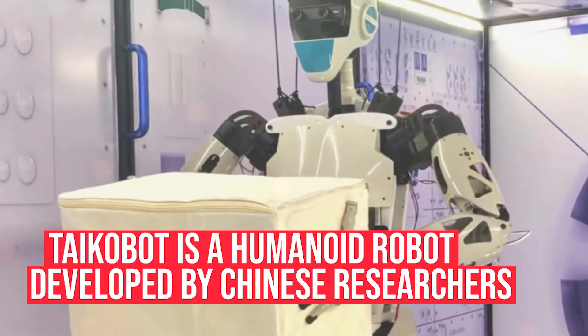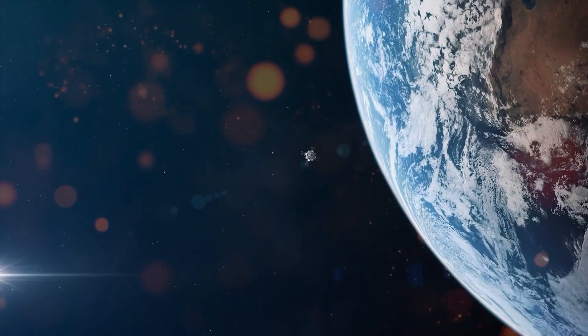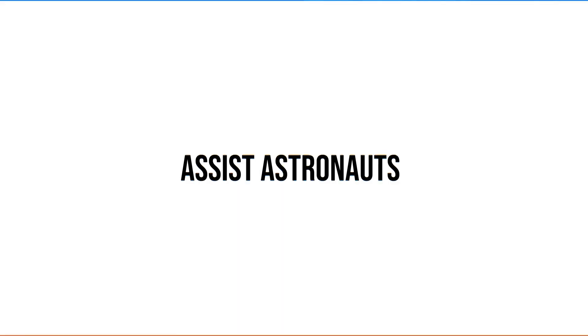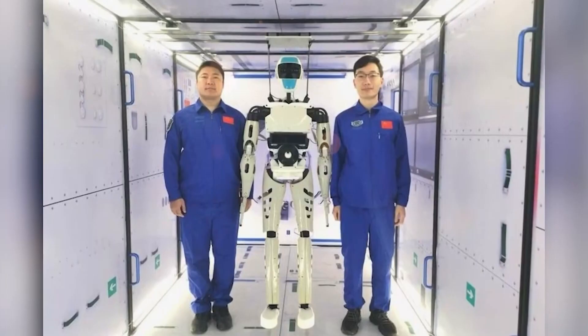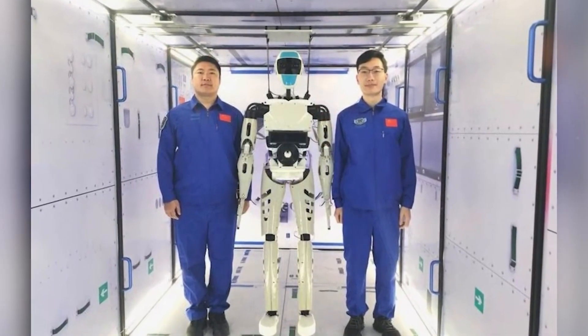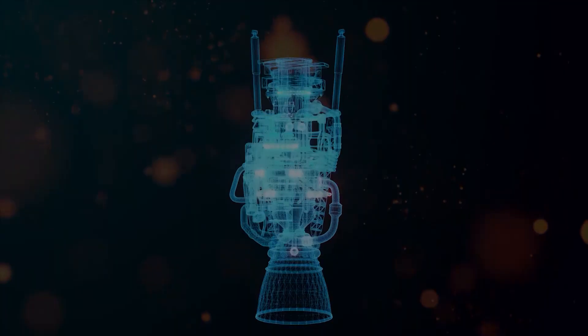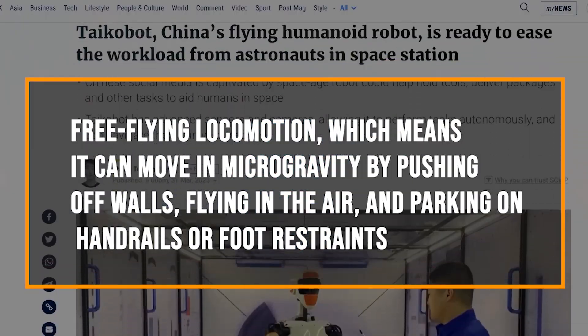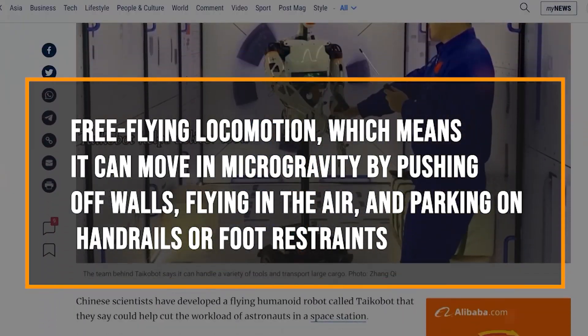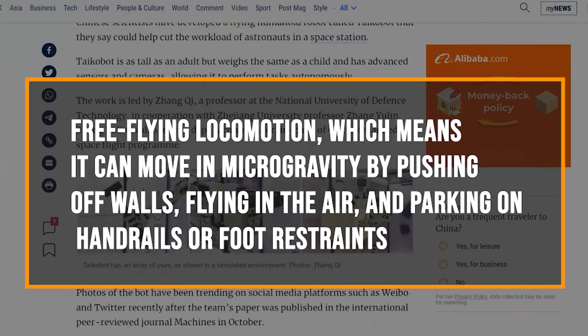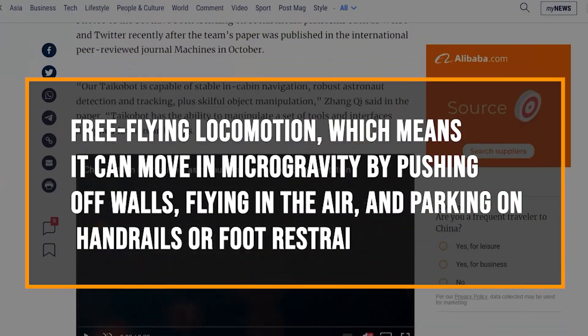Taichobot is a humanoid robot developed by Chinese researchers that is designed to assist astronauts in a space station. Taichobot has several features and capabilities that make it a remarkable robot. One of the features of Taichobot is its free-flying locomotion, which means it can move in microgravity by pushing off walls, flying in the air, and parking on handrails or foot restraints.